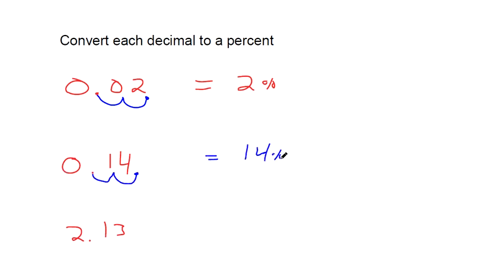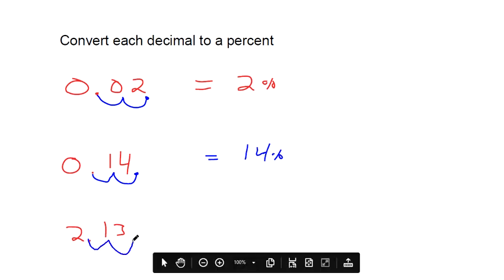And even for weirder-looking numbers, two places to the right. 2.13 is the same as 213%.